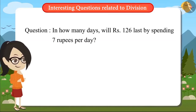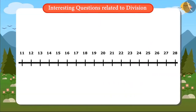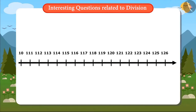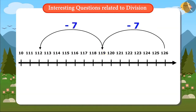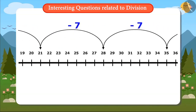Let's see how Vandana solved this problem. To solve this question, I have come up with a technique. I will write 126 on a number line. And now if I subtract 7 from 126, I get to know that after one day, I will be left with Rs. 119. Now I will subtract 7 from 119. The answer is 112. By this, I get to know that after two days, I will be left with only Rs. 112. Likewise, I will keep subtracting 7 on this number line until I reach the figure 0.